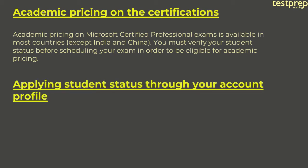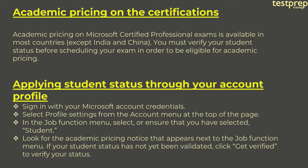Applying student status through your account profile. First, sign in with your Microsoft account credentials. Second, select profile settings from the account menu at the top of the page. Third, in the job function menu, select or ensure that you have selected 'Student.' Fourth, look for the academic pricing notice that appears next to the job function menu. If your student status has not yet been validated, click 'Get Verified' to verify your status.